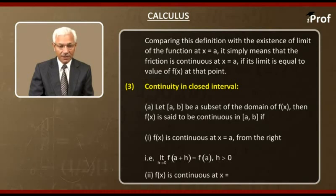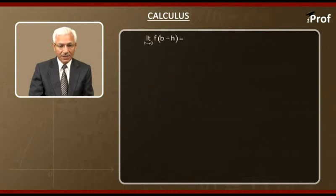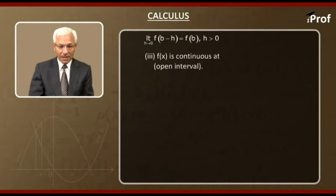Second, f(x) is continuous at x equal to b on the left. That is, limit h tends to 0 f(b - h) is equal to f(b) when h is positive. And third, f(x) is continuous at all points belonging to the open interval (a, b).